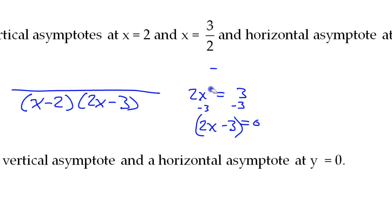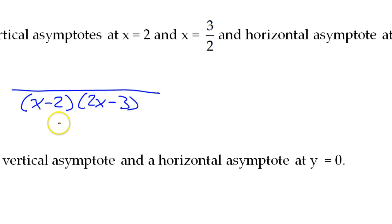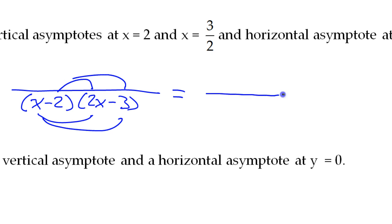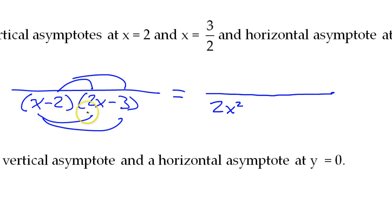I'll multiply the denominator factors together. Using the distributive property: x times 2x is 2x squared; outer gives negative 3x; inner gives negative 4x, so together negative 7x; and negative 2 times negative 3 is positive 6. So the expanded denominator is 2x squared minus 7x plus 6. The degree of the denominator is 2.